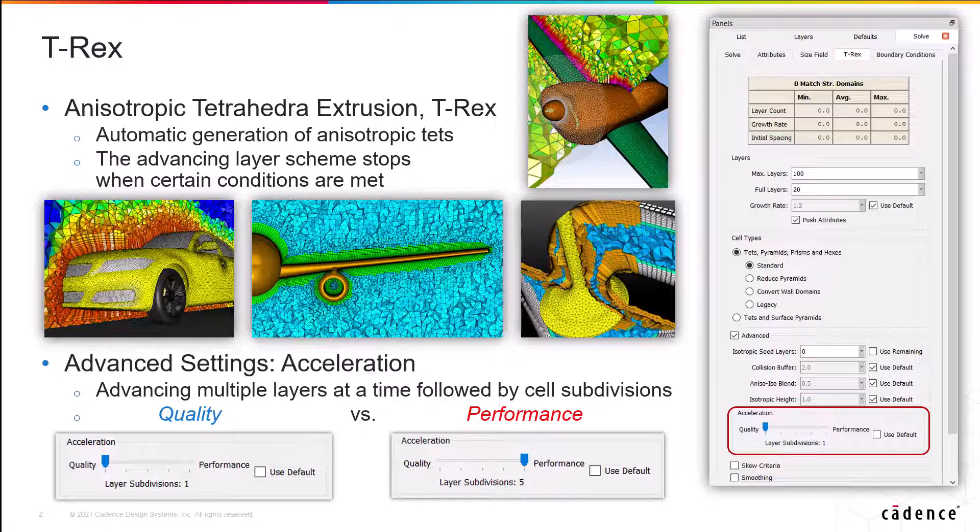Now on the other end of the slider, we have the layer subdivision set to 5, which means that T-Rex will try to advance 5 layers at a time before actually going back and performing the cell subdivisions. Now this can greatly speed up the T-Rex algorithm, which is why we call this the performance setting.